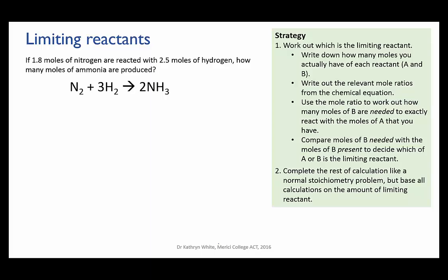Okay so let's ramp this up a bit. We'll use a different reaction and I'm going to ask if I react 1.8 moles of nitrogen with 2.5 moles of hydrogen how many moles of ammonia will be produced? Well the first thing we have to do is to work out which is the limiting reactant because it's that that determines how much product is formed.